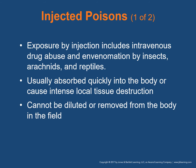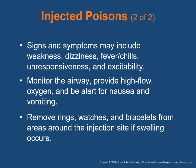Injected poisons include not just intravenous drug use but also envenomation by insects, spiders, reptiles, and snakes. These usually absorb quickly into the body or cause intense local tissue destruction and can't be diluted or removed in the field. Signs and symptoms may include weakness, dizziness, fever, chills, unresponsiveness, or excitability. Monitor the airway, provide high-flow oxygen, bag-valve mask ventilations if needed, and be alert to vomiting. For snake bites, remove rings, watches, and bracelets from around the injection site early, as swelling will occur.